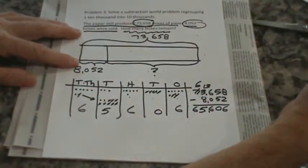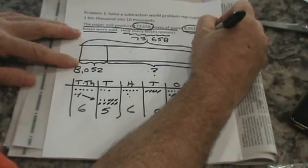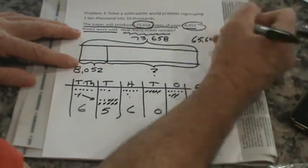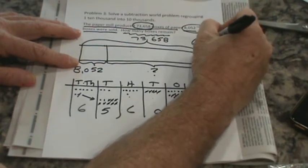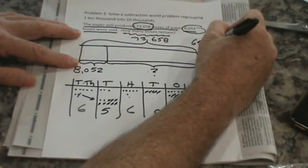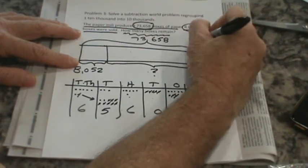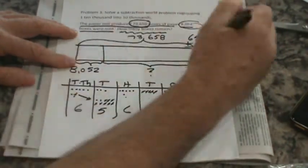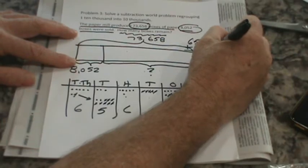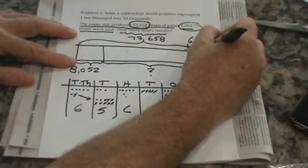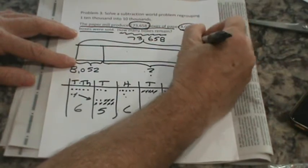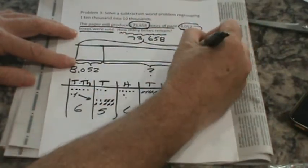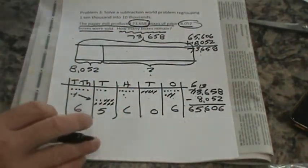So let's do sixty-five thousand six hundred six plus eight thousand fifty-two. Six plus two is eight, looking good. Zero plus five is five, still looking good. I'm gonna run out of room. Six plus zero stays six. Five plus eight is thirteen - bring over the one. I did run out of room. Six plus one is seven. And it looks like we're absolutely right.